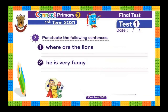Question number seven. Punctuate the following sentence. Who wants to answer? Where are the lines? Question mark. Because we have 'where' — it's a question.